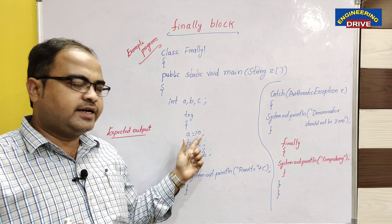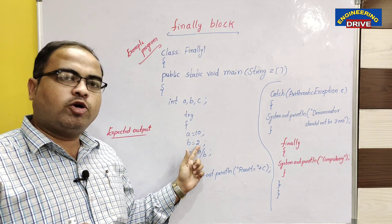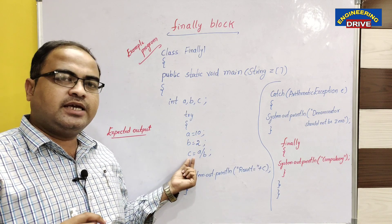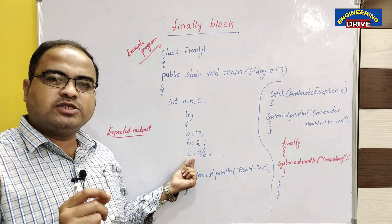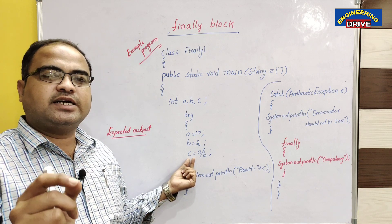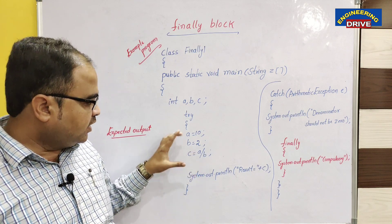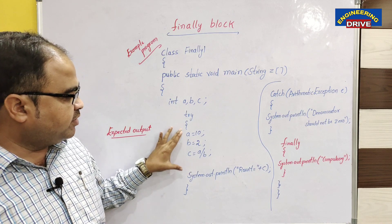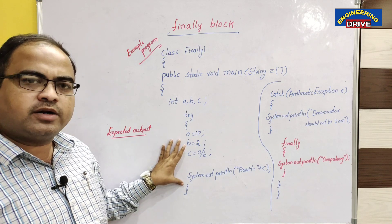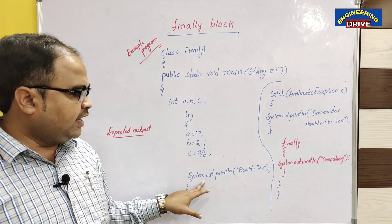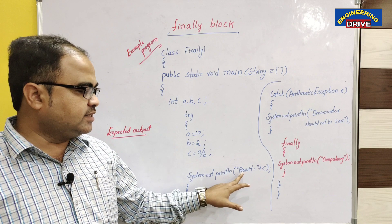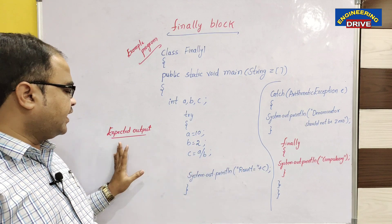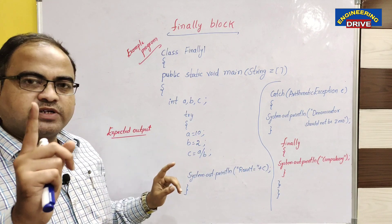The value of a is 10, the value of b is 2 — so 10 divided by 2. In the variable c, we will get the result as 5. The code which can generate an exception I have kept in the try block, and I want to display this answer — that is, result is equal to 5.